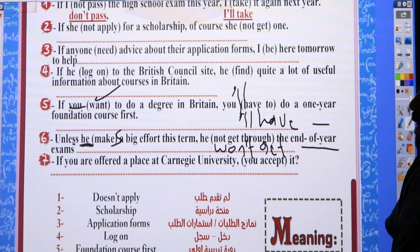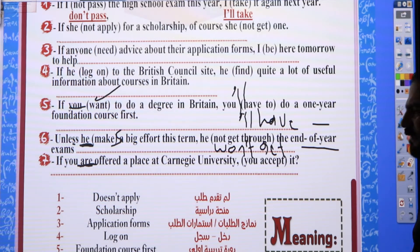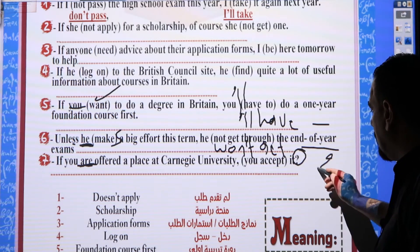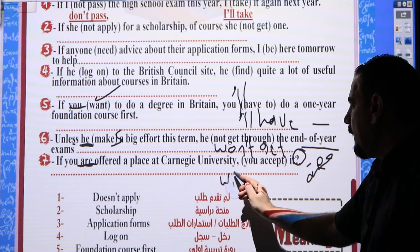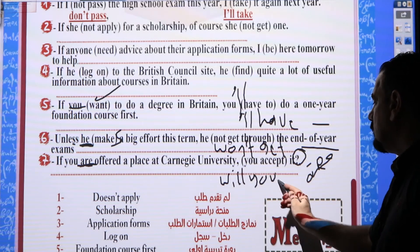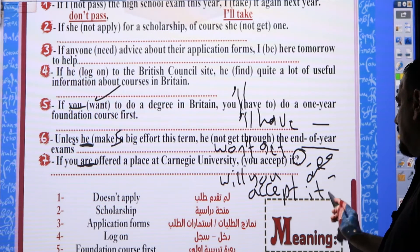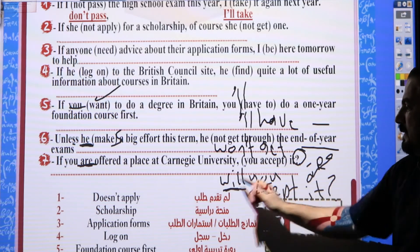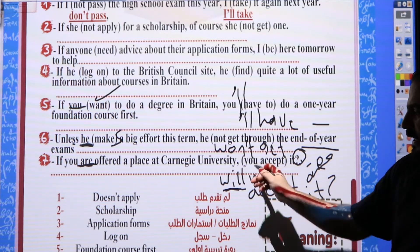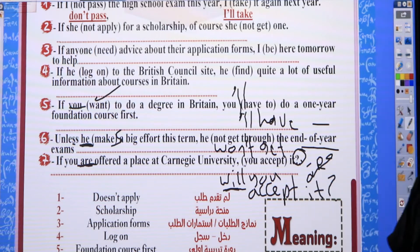Number seven: 'If you are offered a place at this university, will you accept it?' Notice this is a question — because it's interrogative, the result clause begins with 'will you'. That's why I said this one is important. This completes the second exercise.